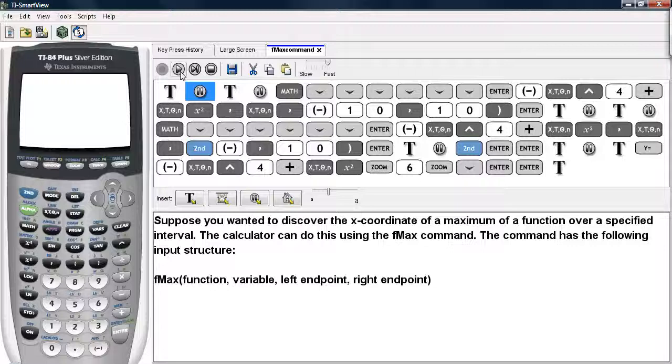You select fmax from the math menu, type in the function, the variable, the left endpoint, and the right endpoint.